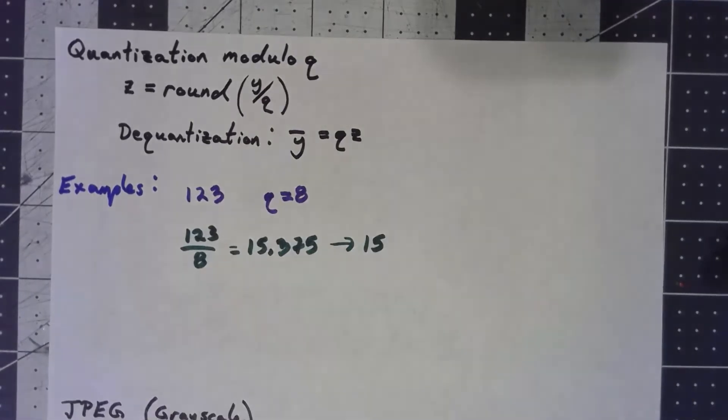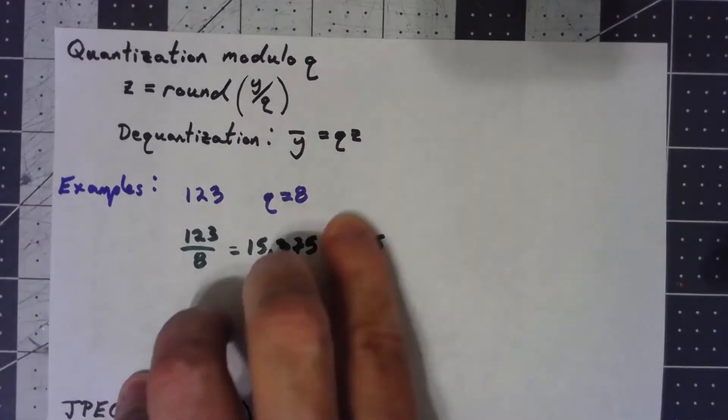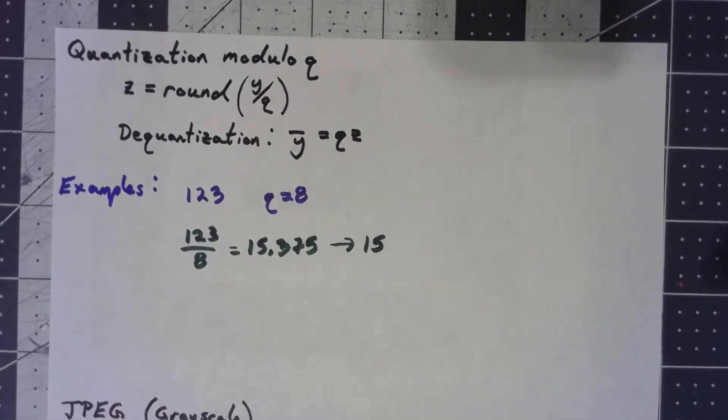Now it's going to turn out we can do even better than that, but just right now you can see that. And so we store the 15 and then when we want to go ahead and reconstruct the image, we take it back a little bit. Now we can't get the full thing off. This is again a lossy kind of compression.